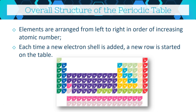We no longer order the periodic table by atomic weight. Instead, we order it by the one thing consistently different between every element: the number of protons, or atomic number. Hydrogen has one proton, argon has 18 — no other element has exactly that number. Our rows correspond to electron shells, and elements are arranged left to right, top to bottom in order of increasing atomic number.